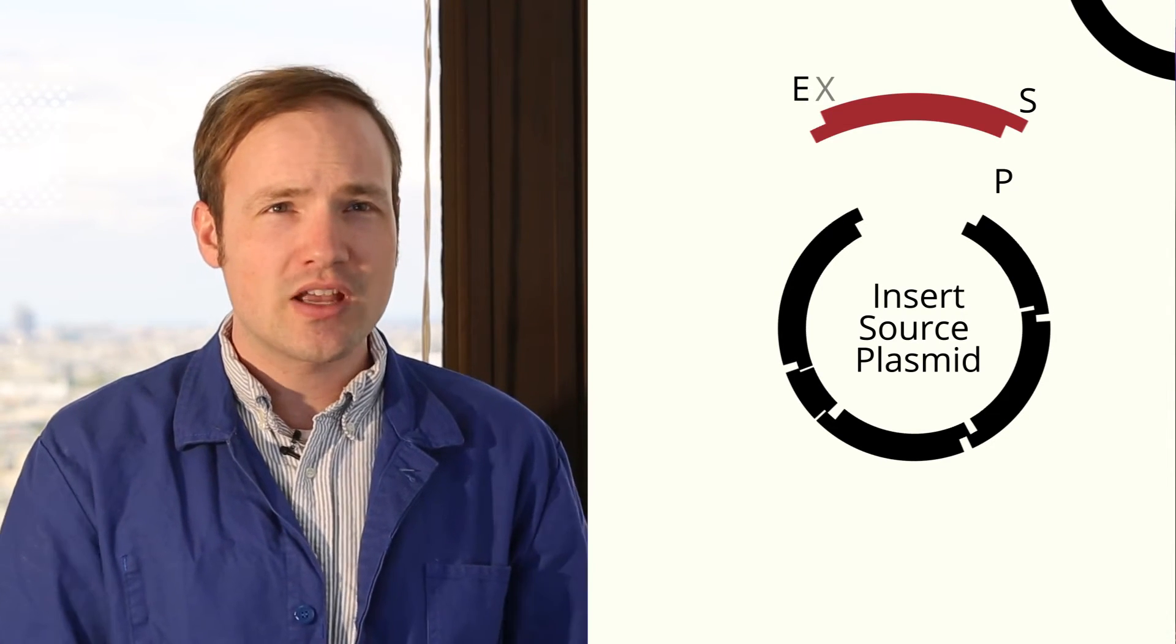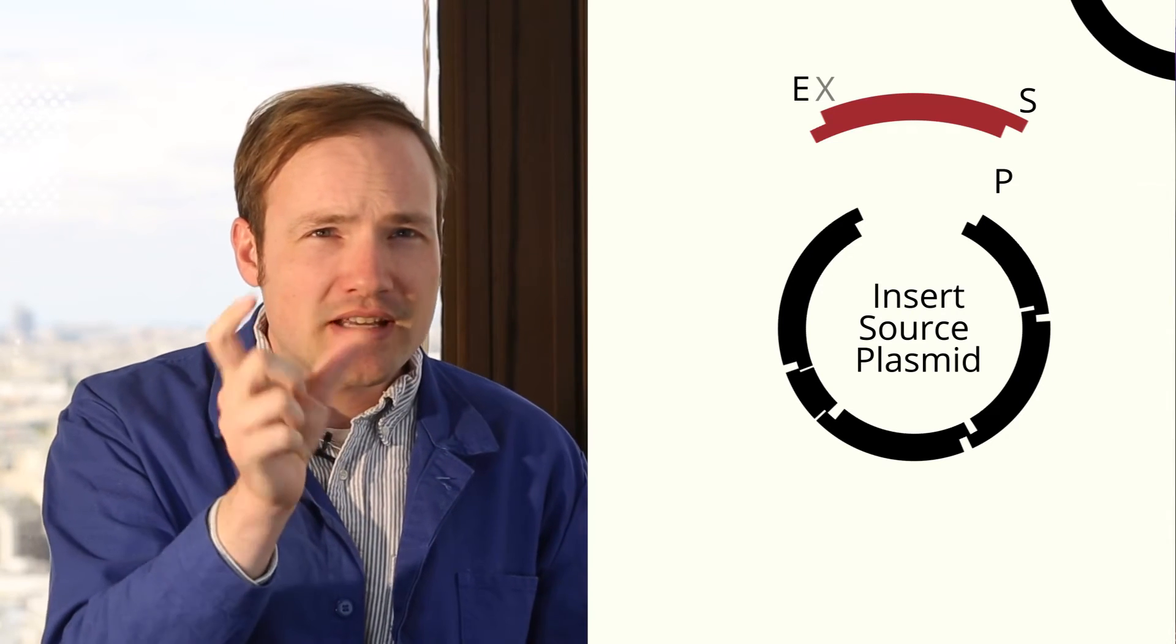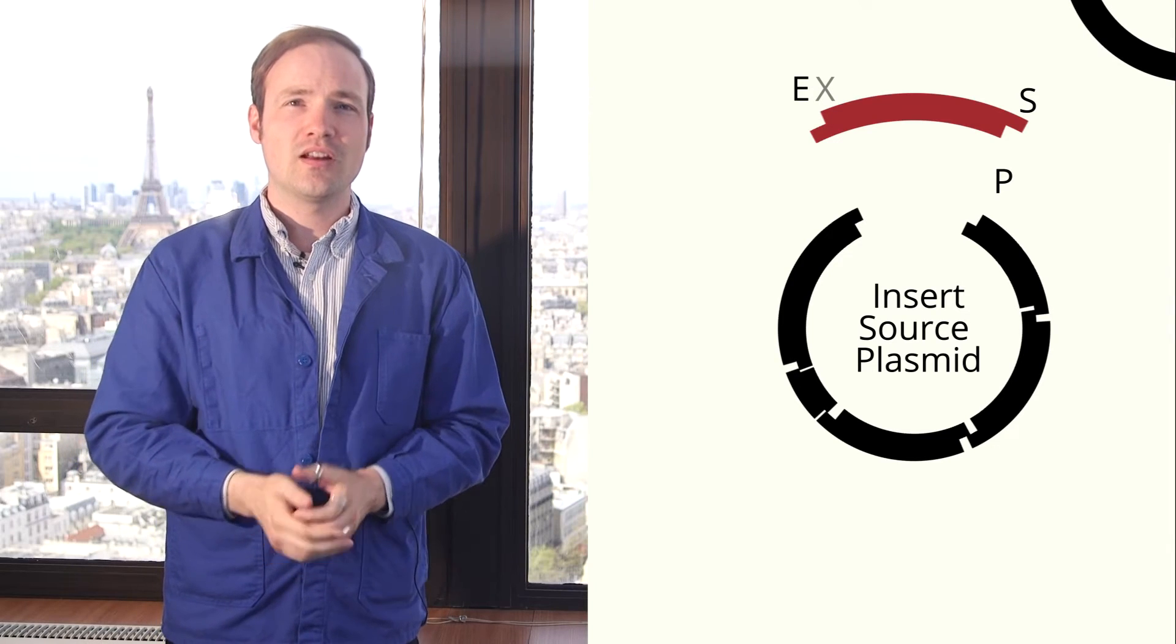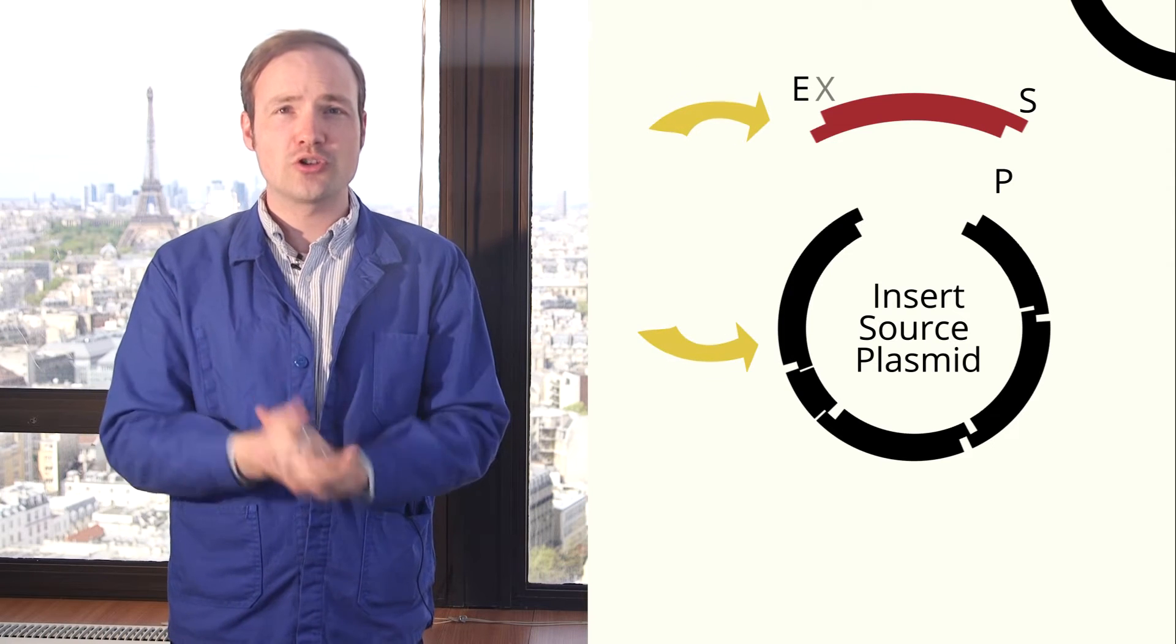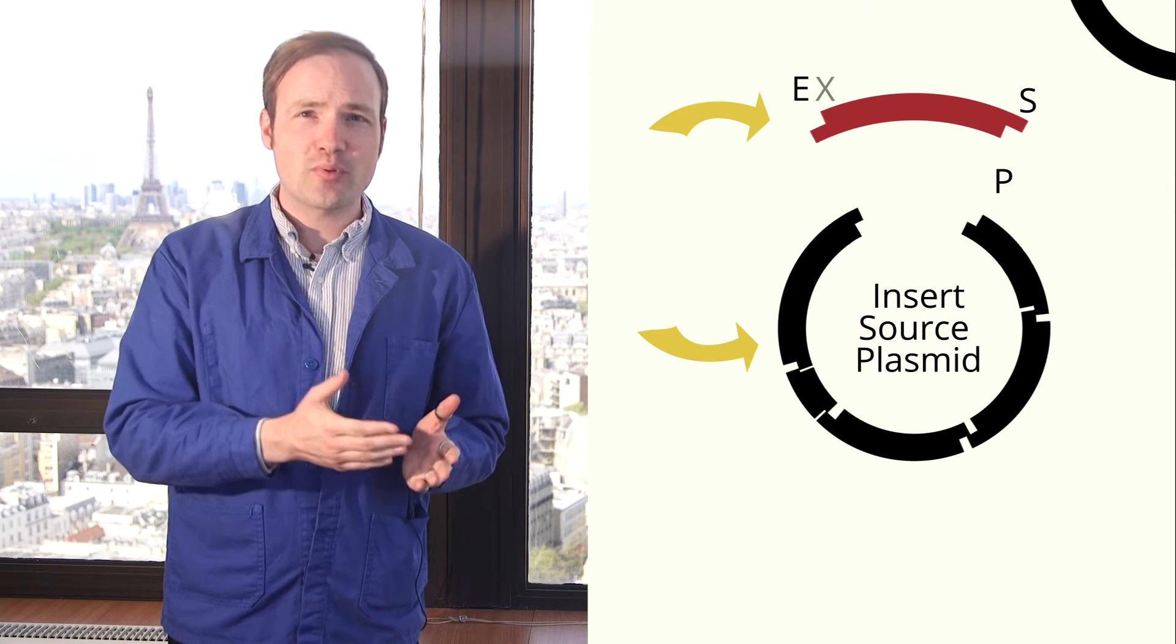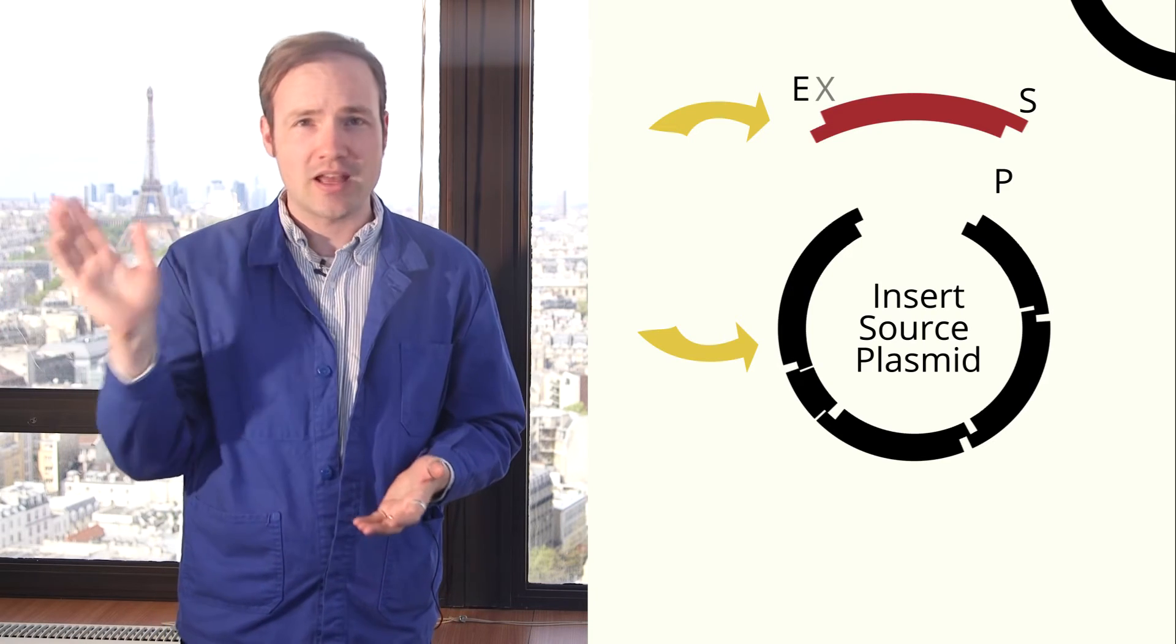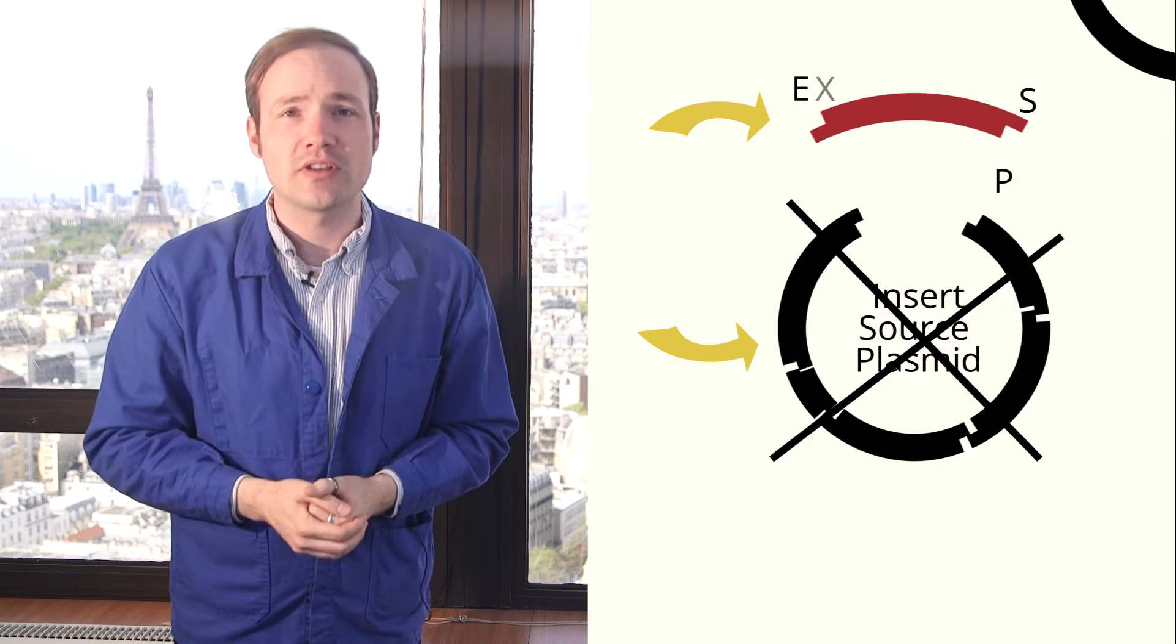By using two different enzymes, we give each insert a clear front and back. Each sticky end will only bind to its complement. You'll notice that this plasmid has been cut into two large pieces. We need to separate the insert sequence that we want from the rest of the plasmid that we don't. And this can be done, for example, using gel purification.